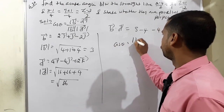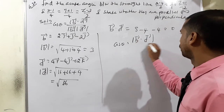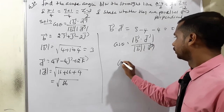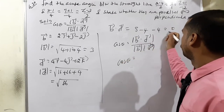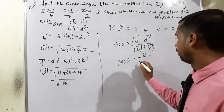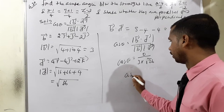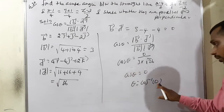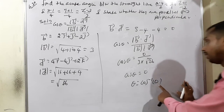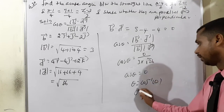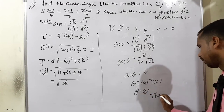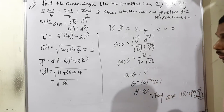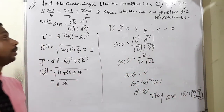Therefore cos theta equals b·d divided by modulus b times modulus d. Since b·d equals 0, cos theta equals 0, so theta equals cos inverse of 0 equals 90 degrees. We know cos 90 equals 0, therefore theta equals 90 degrees, which means the lines are perpendicular. I will continue the next example.